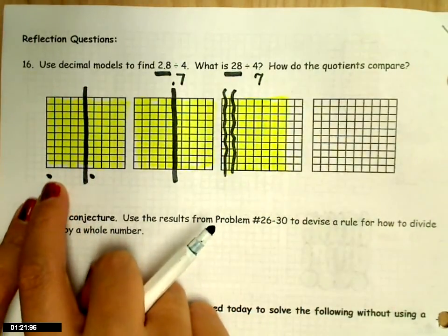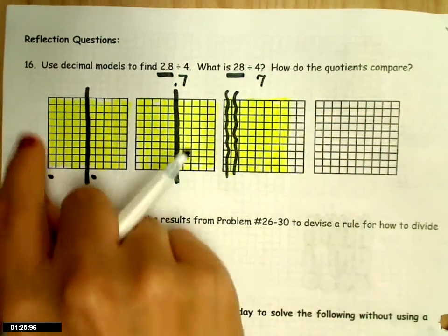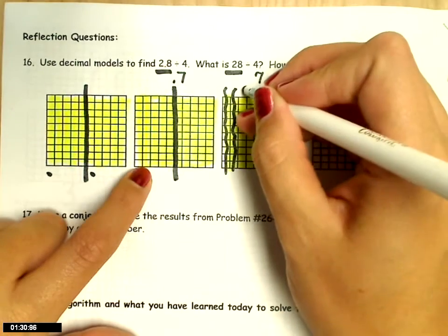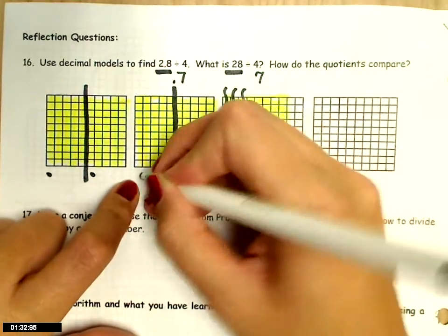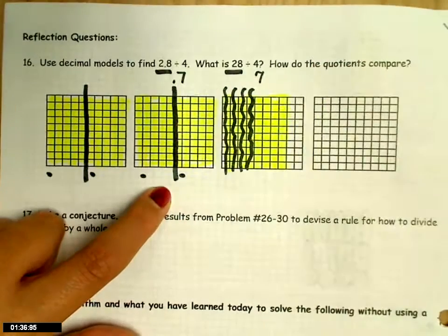Now, I still have some left over, so I'm going to do it again. Starting with the first group, take a tenth, add it to this group, take a tenth, add it to that group, take a tenth, add it to this group, and take my last tenth, and add it to this group.